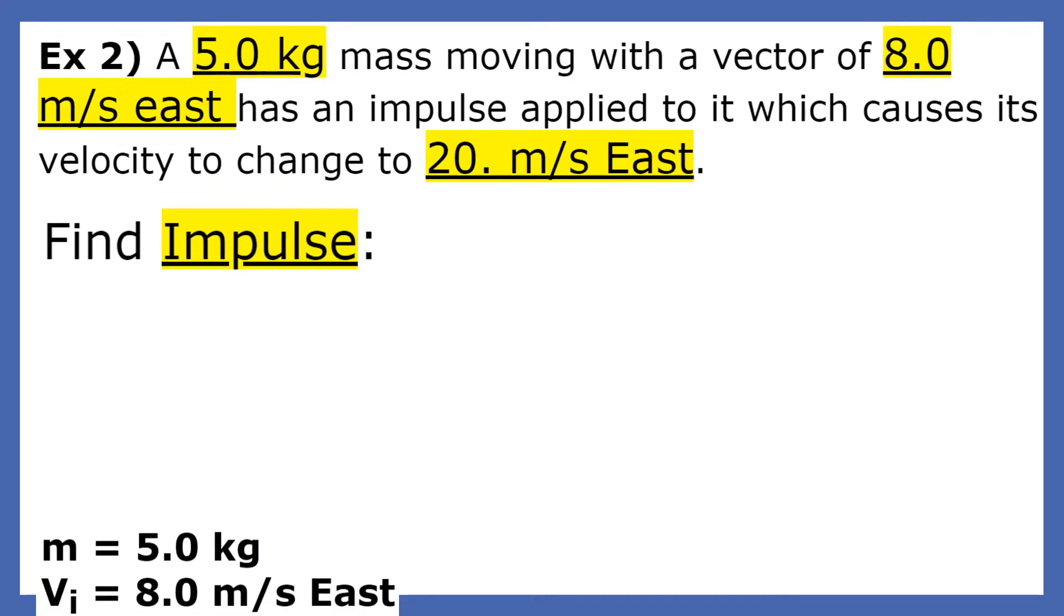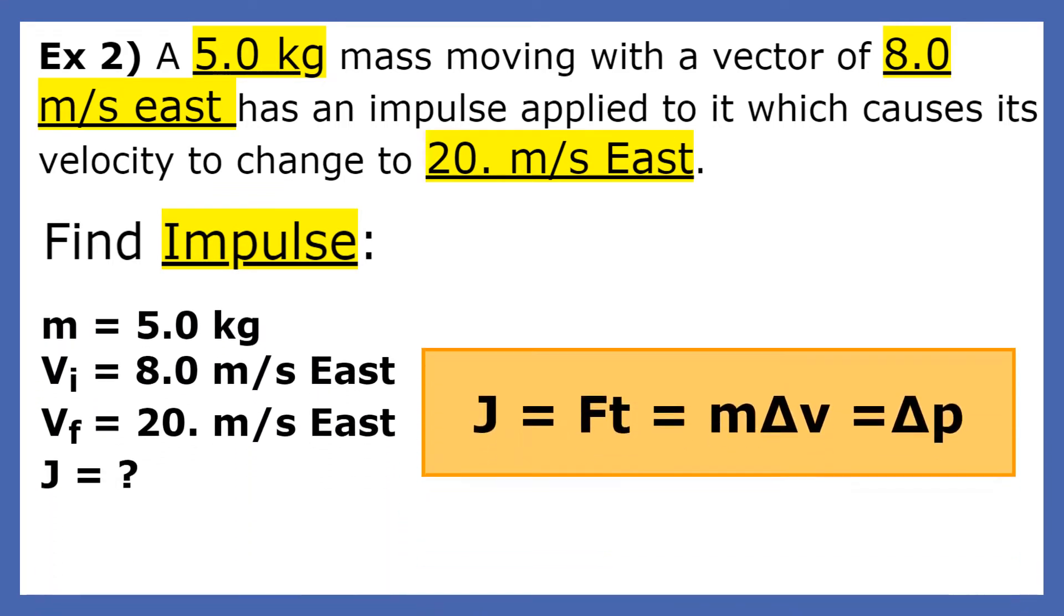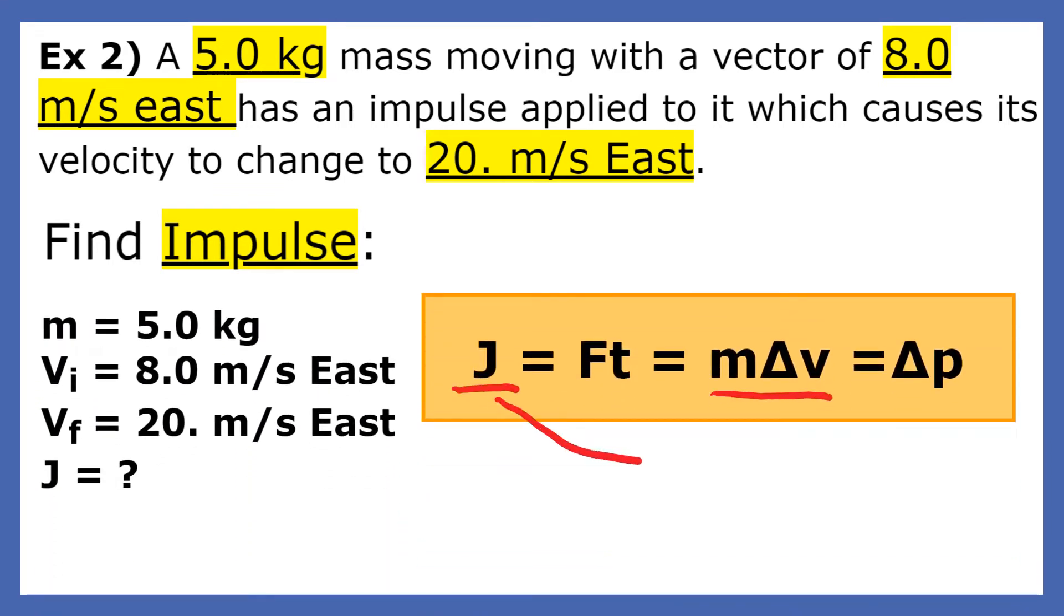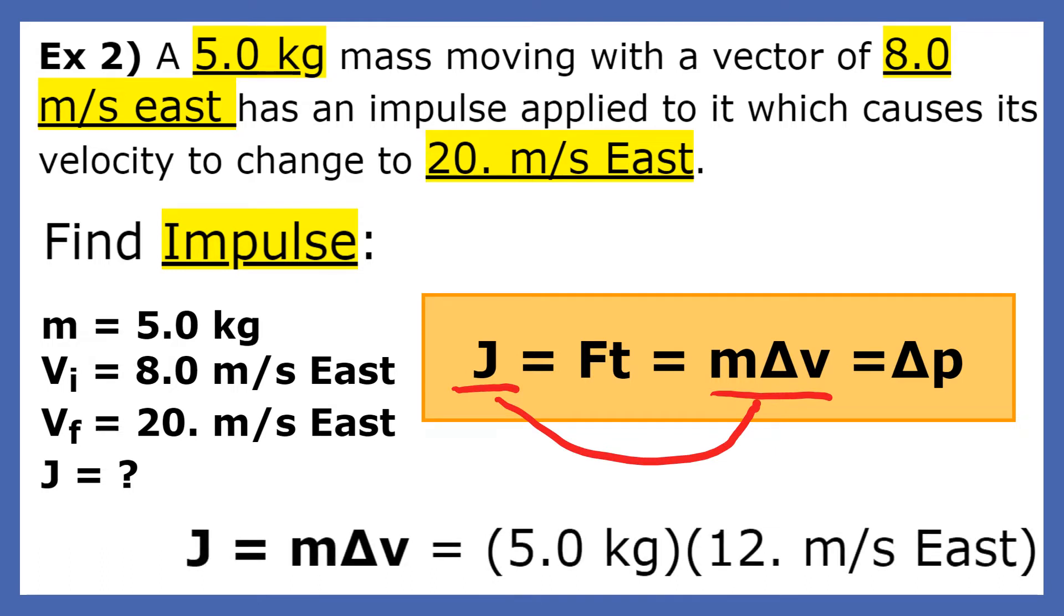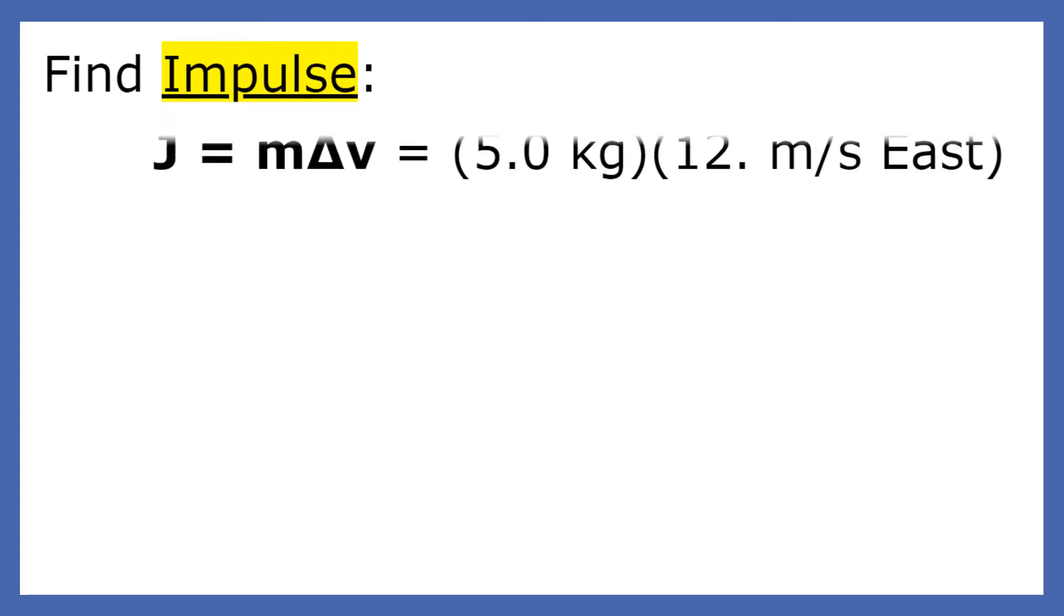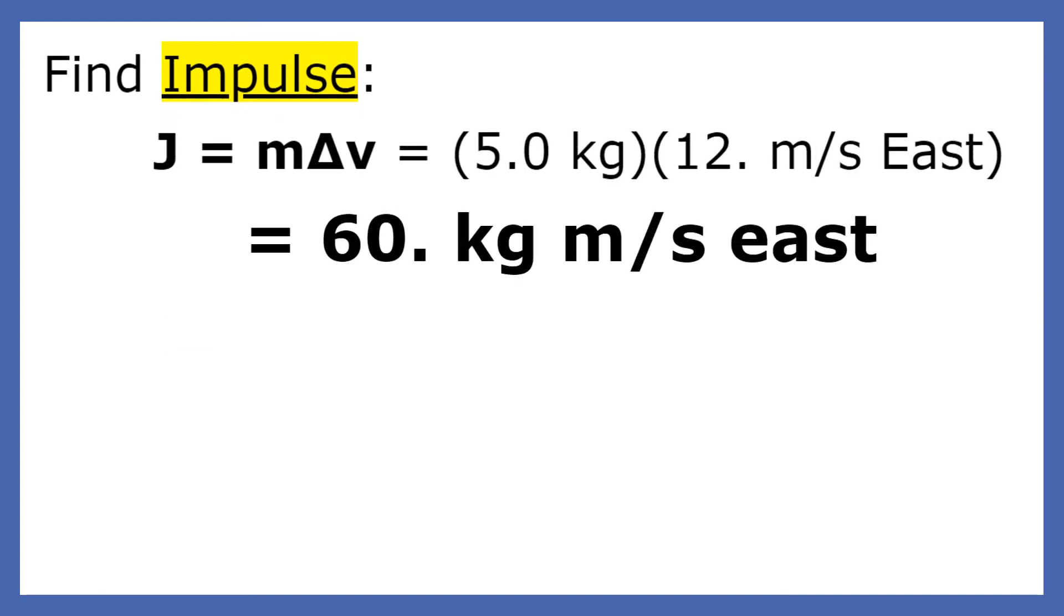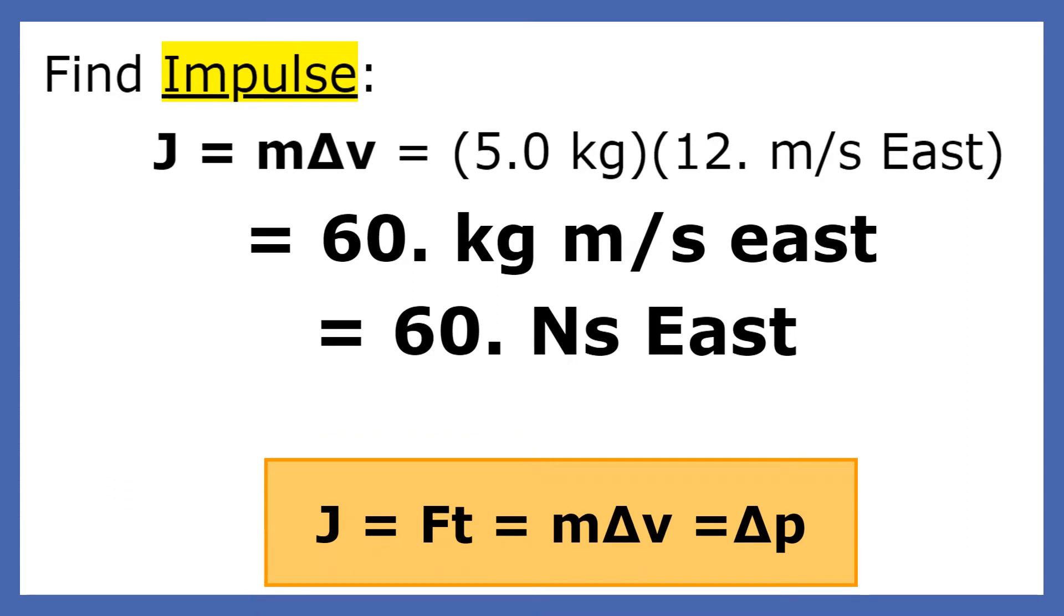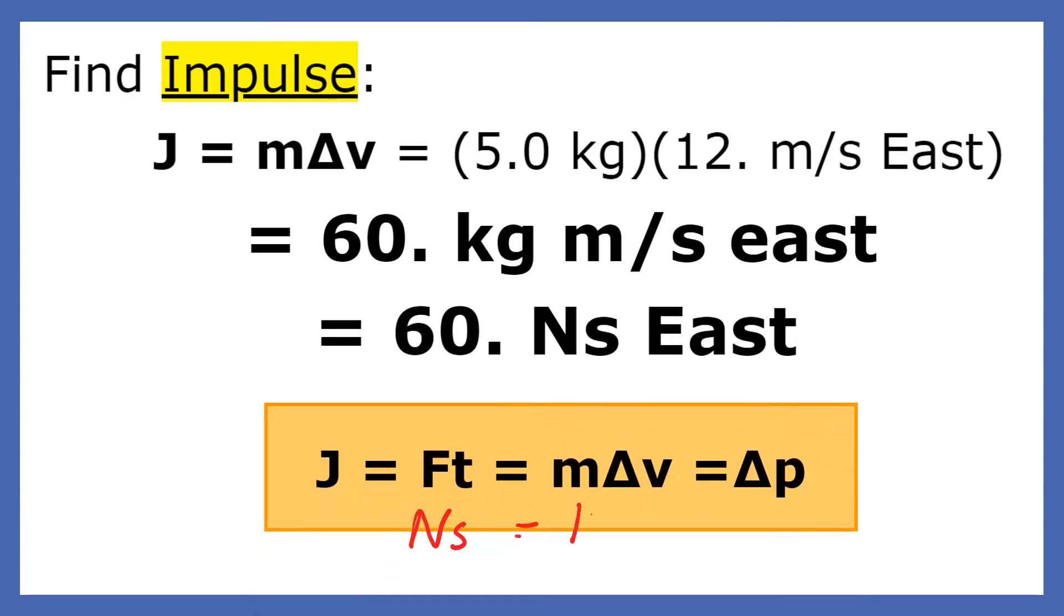Since J equals Ft and Ft equals m delta v, we find that J then equals m delta v. We created this equation because it matches the variables that we have and want. The impulse turns out to be 60 kilogram meters per second east or 60 newton seconds east.